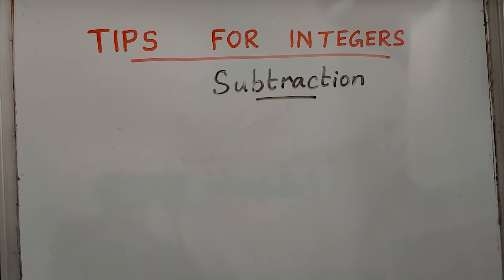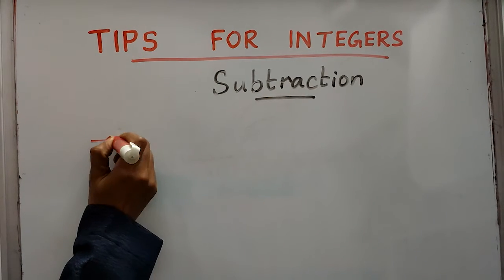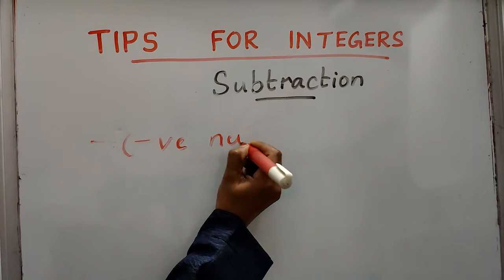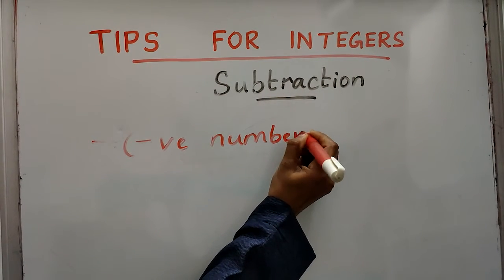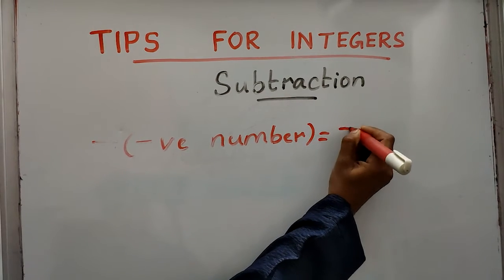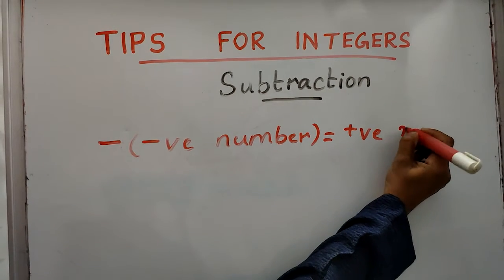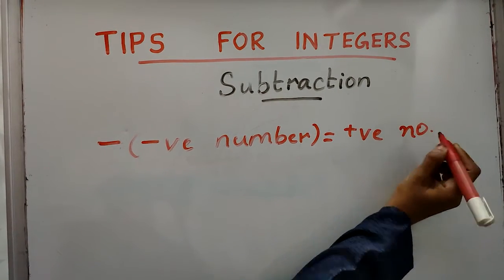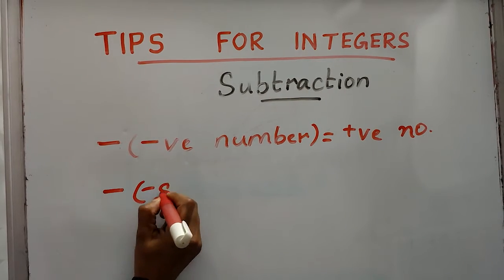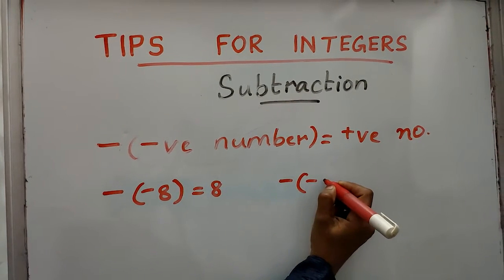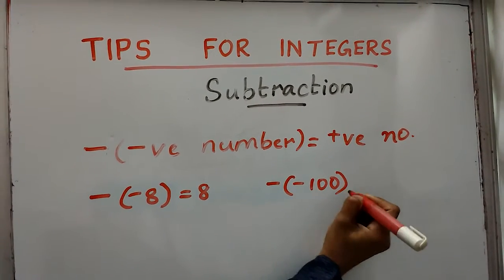Next, we are discussing about subtraction. Before that, one important thing I will explain — negative of a negative number is positive. For example, negative of negative 8 is 8, or negative of negative 100 is 100.